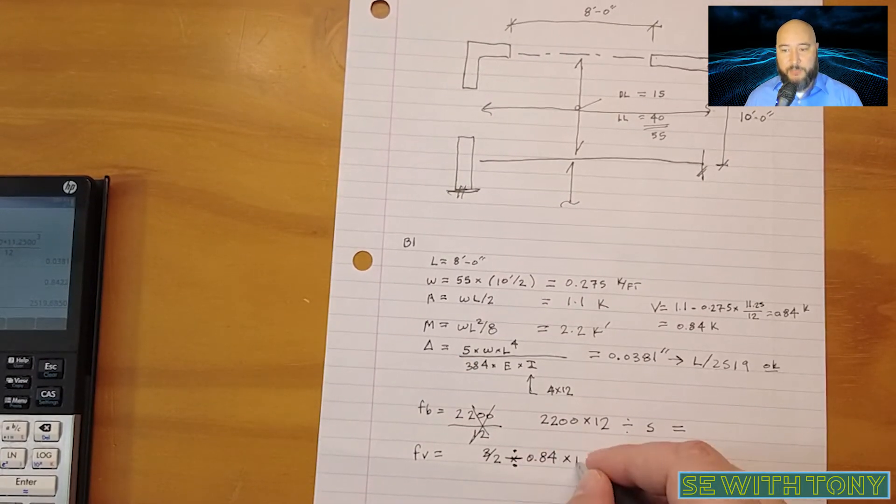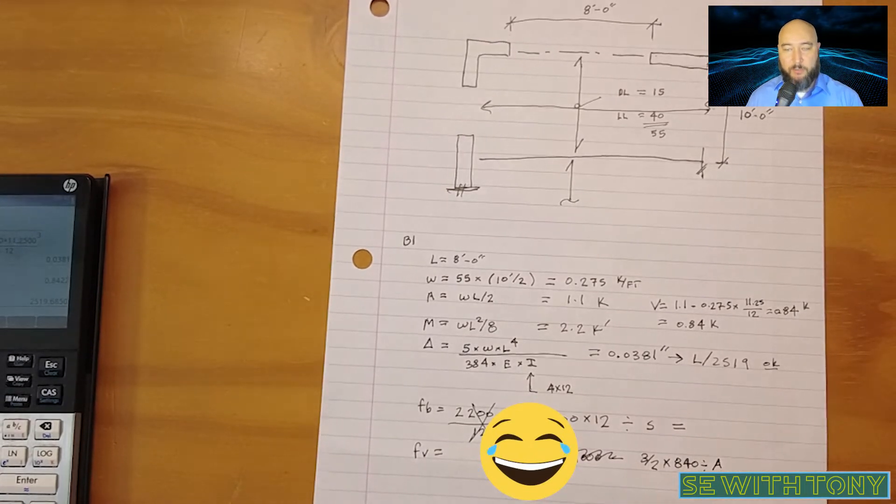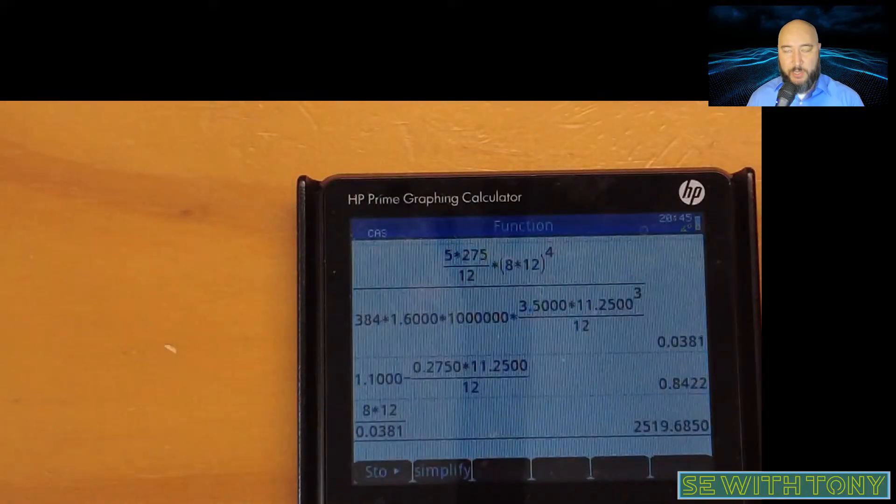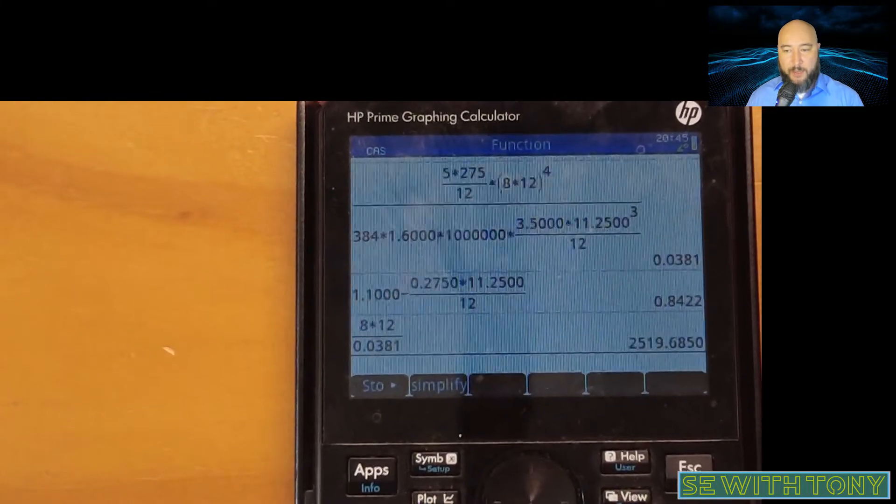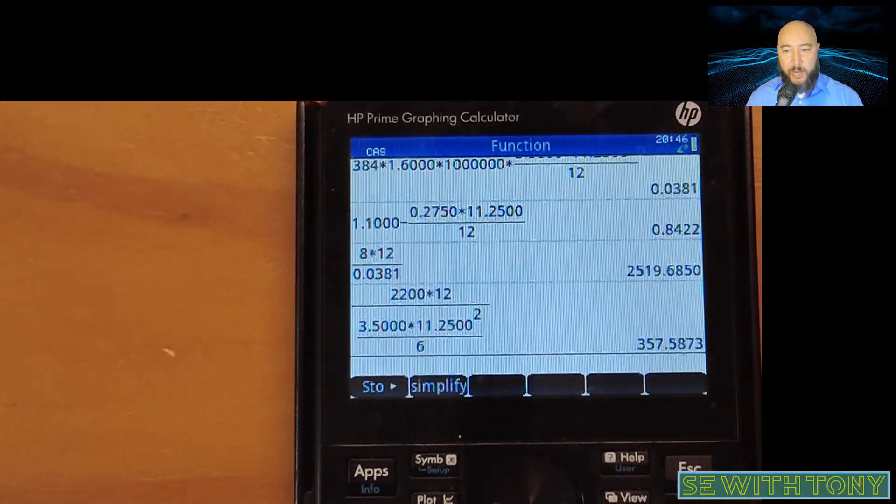And I apologize for the error in formulas here. The bending stress is the moment demand over the section modulus, and the shear stress is 3 halves times the shear demand over the rectangular area of the beam.